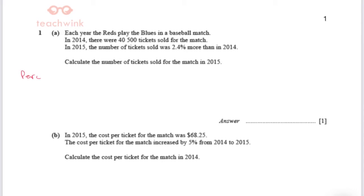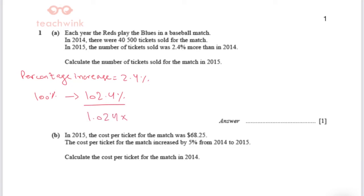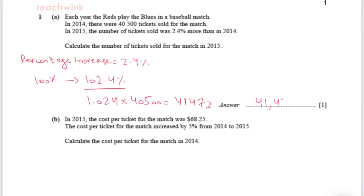The percentage increase between the two years was 2.4%. That means in 2014 it was at 100%, so in 2015 it became 102.4%. If you convert this to a decimal, this becomes 1.024. You simply multiply this by the number of tickets sold in 2014, which is 40,500. When you multiply 40,500 by 1.024, you get 41,472. The number of tickets sold in 2015 were 41,472.